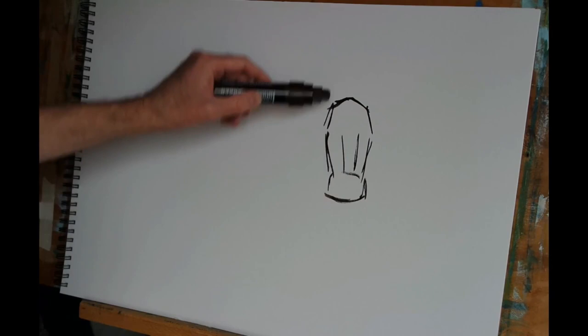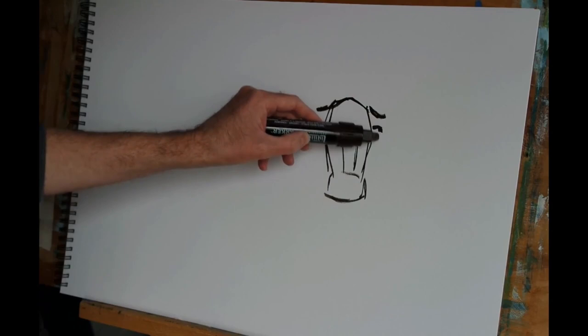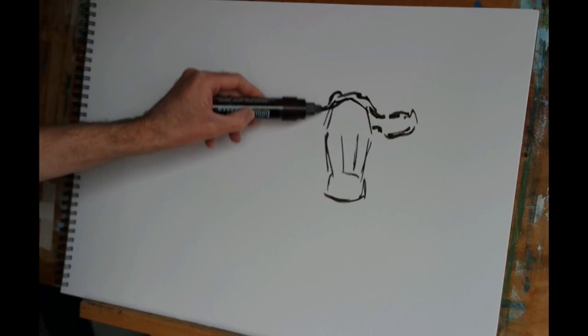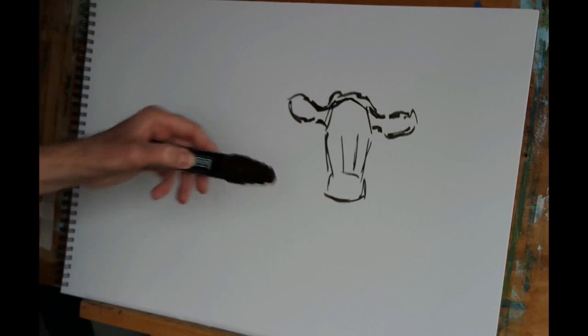I'm beginning using a burnt umber Liquitex acrylic paint marker, and this allows me to put down paint lines very quickly as you can see. I don't have to keep repeatedly going back to the palette to refresh the way you would if you were using a brush.